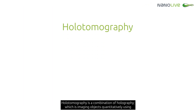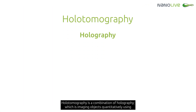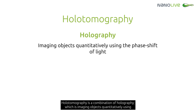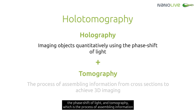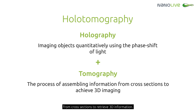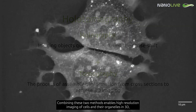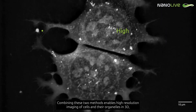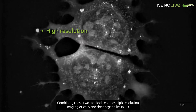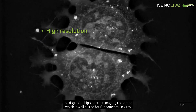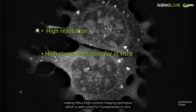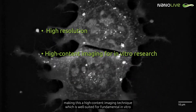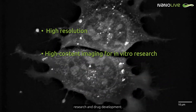Holotomography is a combination of holography, which is imaging objects quantitatively using the phase shift of light, and tomography, which is the process of assembling information from cross sections to retrieve three-dimensional information. Combining these two methods enables high-resolution imaging of cells and their organelles in 3D, making this a high-content imaging technique well suited for fundamental in vitro research and drug development.